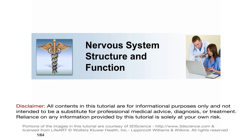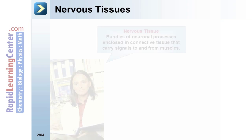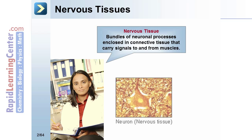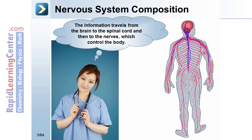Nervous system structure and function: this segment of the tutorial will focus on neurons receiving, transmitting, and sending signals. Nervous tissues are bundles of neuronal processes enclosed in connective tissues that carry signals to and from muscles. The information travels from the brain to the spinal cord and then to the nerves, which control the body.